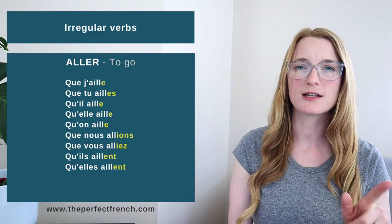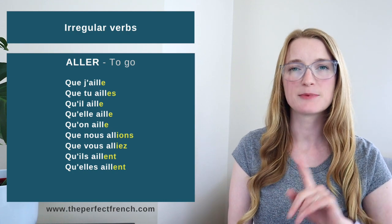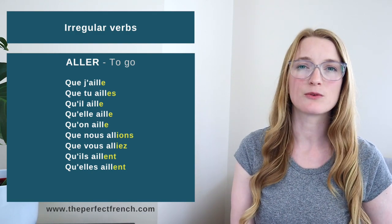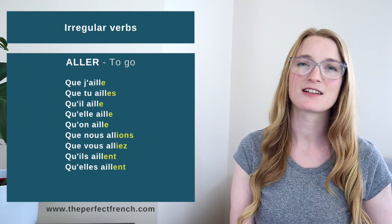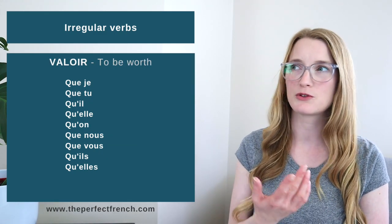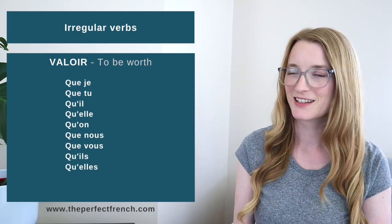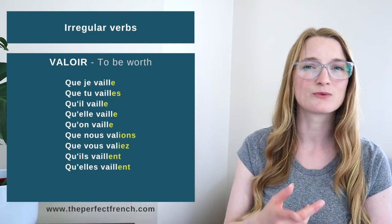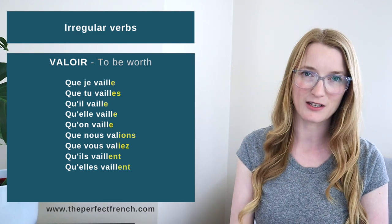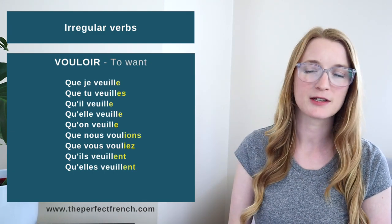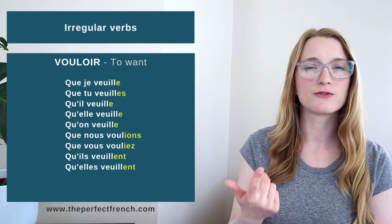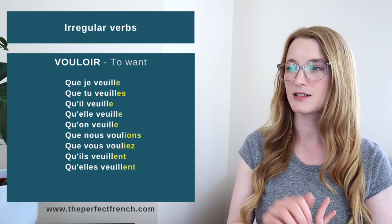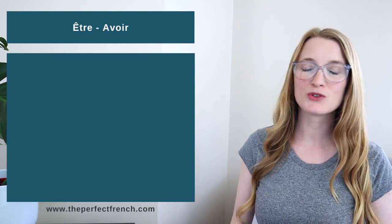Aller — the stem is a-i-l-l in most forms except nous and vous: que j'aille, que tu ailles, qu'il/qu'elle/qu'on aille, que nous allions, que vous alliez, qu'ils aillent, qu'elles aillent. Valoir — to be worth, you won't use it that much — que je vaille, que tu vailles, qu'il/qu'elle/qu'on vaille, que nous valions, que vous valiez, qu'ils vaillent. Vouloir also has an irregular stem and two different stems: que je veuille, que tu veuilles, qu'il/qu'elle/qu'on veuille, que nous voulions, que vous vouliez, qu'ils veuillent.